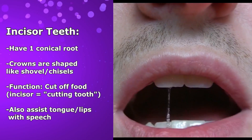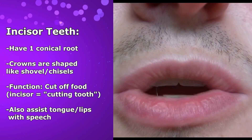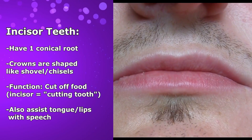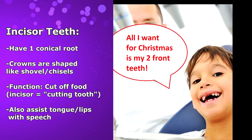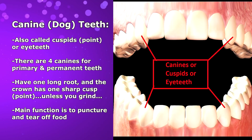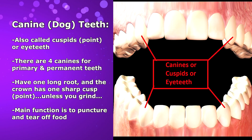However, incisors also work with your tongue to produce speech, which is why so many children go around singing that obnoxious song, "All I want for Christmas is my two front teeth." Next, you have the canine teeth, which are also called cuspids or eye teeth.